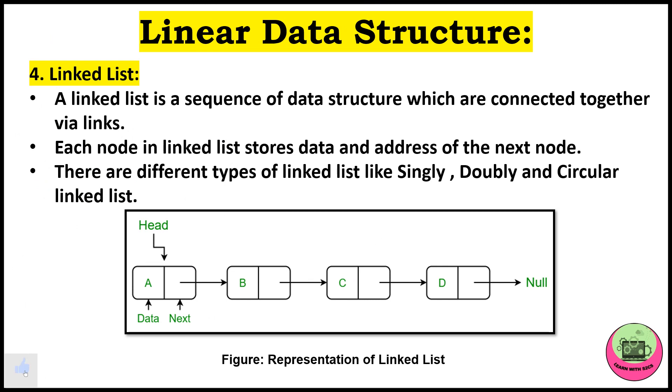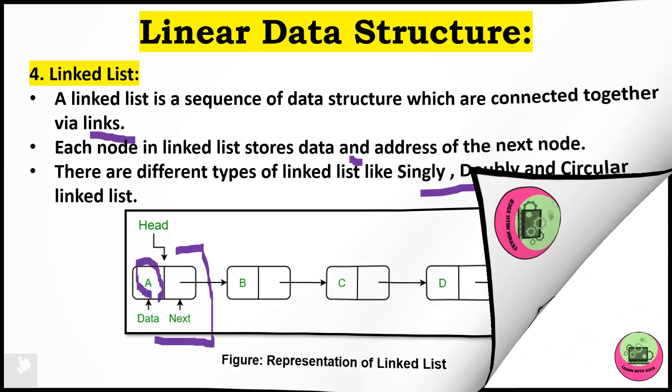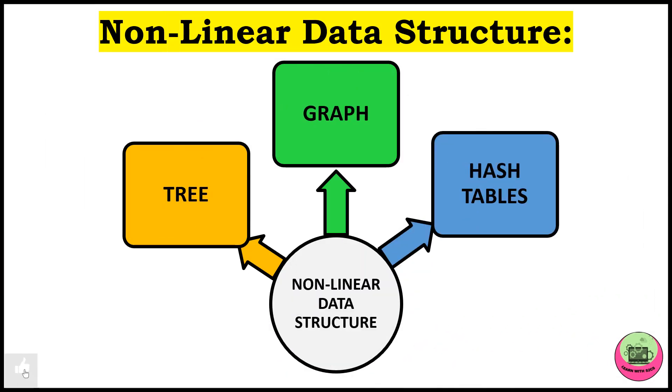Coming to the linked list, it's a sequence of data structures which are connected together via links. Each node in linked list stores data and address of the next node. See here, the data is stored here and the next field contains the pointer to the next node which is B. There are different types of linked list: singly, doubly. If you want in detail, you can comment.